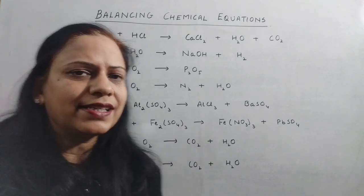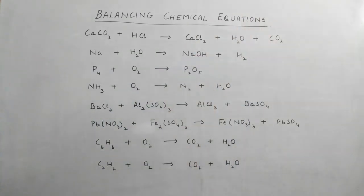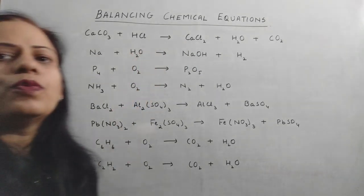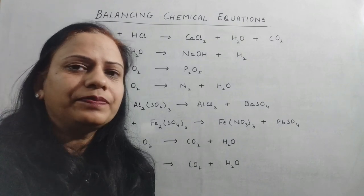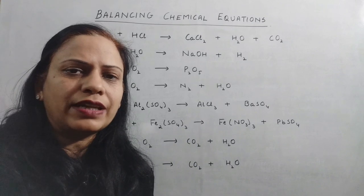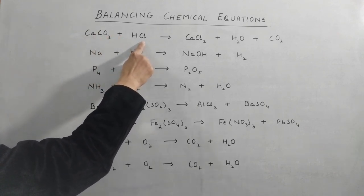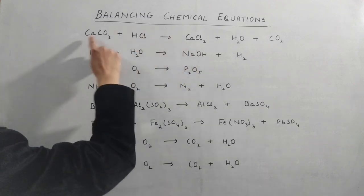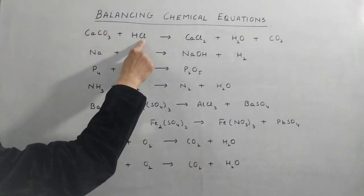Let's begin with the first equation: CaCO₃ + HCl → CaCl₂ + H₂O + CO₂. When balancing an equation, we prioritize what atoms to balance first. I always prefer to balance hydrogen and oxygen last — first we balance the other atoms. In this equation, calcium is one on the left and one on the right, so it's already balanced. Carbon is one here and one here, also already balanced.